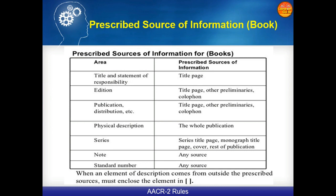It is compulsory to write that particular information in square brackets. For example, suppose our book is 'Theory of Cataloguing' written by Rakesh Gupta, and there is no 'by' on the title page — you don't find 'by Rakesh Gupta.' If you want to write it in the card catalogue, it should be written in square brackets. That is why it is mentioned that if anything is coming from outside the prescribed source, we have to enclose it in square brackets.